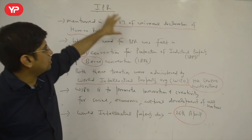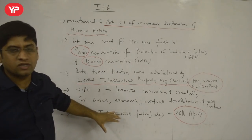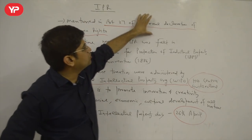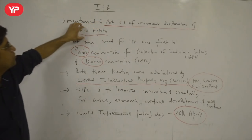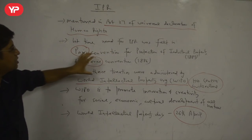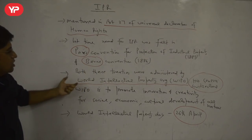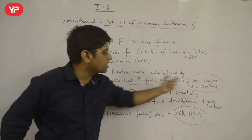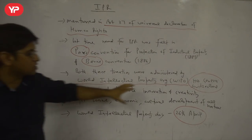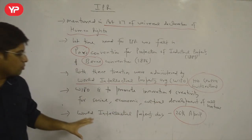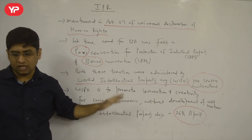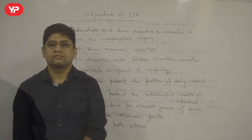Key facts to remember from this domain: one — under which article of the Universal Declaration of Human Rights is IPR mentioned (Article 27); two — IPR was first created through the Paris and Bern Conventions; three — the World Intellectual Property Organization's headquarters is in Geneva, Switzerland; four — World Intellectual Property Day is celebrated on 26th April. These are very important facts for the exam.